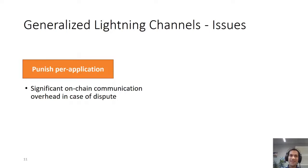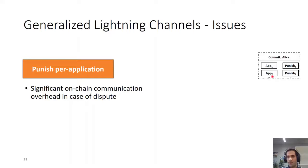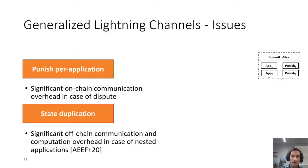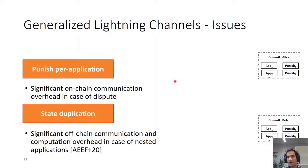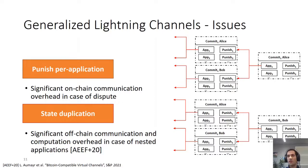Punishment per application significantly increases on-chain communication in case of disputes, because when a commit transaction is posted you're repeating many punishment conditions that could have been simplified into one—namely that a party posted an outdated commit transaction. State duplication substantially increases the off-chain overhead, as needed by papers such as virtual channels over Bitcoin by Omaya et al. Having nested applications results in exponential growth of off-chain communication.